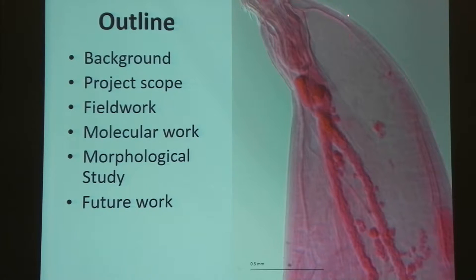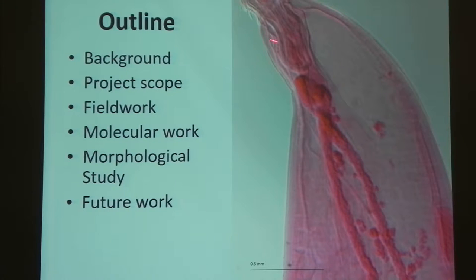I'll be referencing a lot to the proboscis of the worm and using that as a snapshot to represent the species. Just to orient you, that's the anterior end of the worm that sticks into the intestine of the fish.